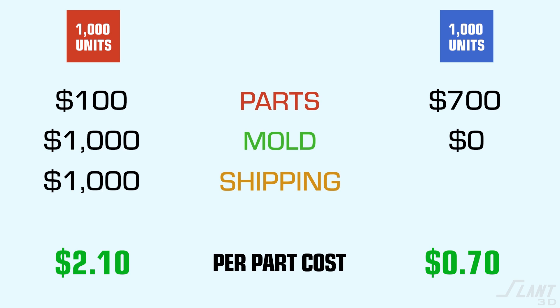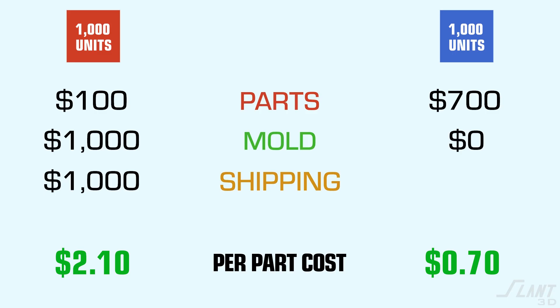Printing has a 70-cent cost per part. And since we're based in the United States we don't have to ship as far — if we're making a thousand parts it might cost $300 to $400 to ship domestically, which means you're adding about 30 cents per part. So you're looking at around $1.00 for 3D printing versus $2.10 for injection molding with amortization.